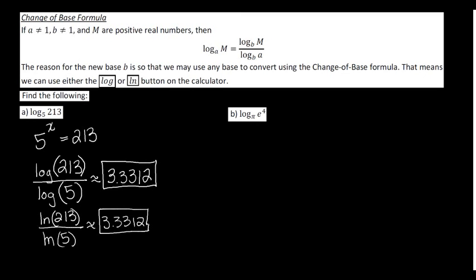For part b, since the argument actually has e in it, I'm going to use the natural log to do the change of base formula. Using one of the logarithm properties here, our base of our logarithm, because natural log is base e, so base e matches with the e on the inside, we can cancel these. The natural log and the e cancel, and we're just left with 4 over the natural log of pi, which then when we plug that into the calculator, and round it to four decimal places, we get 3.4943, about.